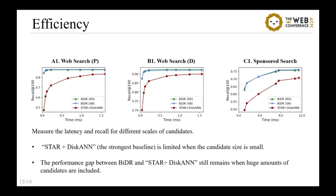The evaluation of efficiency is shown in the figures. In our experiments, time latency and recall rate are measured for different scales of candidates. Expanding the candidate size contributes to a higher recall rate as ground-truth answers are more likely to be included, but also increases the cost of search and post-verification, incurring higher time latency. The candidate size is increased from 100 to 10,000. As we can see, the baseline is limited when the candidate size is small, and the performance gap between BIDR and the baseline remains even when large numbers of candidates are included.